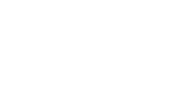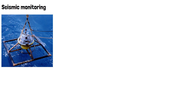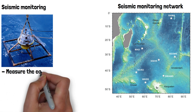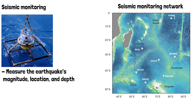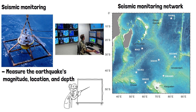The first way it does this is through seismic monitoring. Seismic monitoring networks consist of numerous seismometers strategically positioned across seismically active regions, both on land and on the ocean floor. Seismometers are sensitive instruments that measure ground motions caused by seismic activities such as earthquakes and volcanic eruptions. These instruments measure the earthquake's magnitude, location, and depth, providing critical data for assessing the potential tsunami threat. Data collected by seismometers are transmitted in real-time to seismic monitoring centers for analysis, where scientists assess the potential of the earthquake to generate a tsunami and its potential impact on coastal regions.